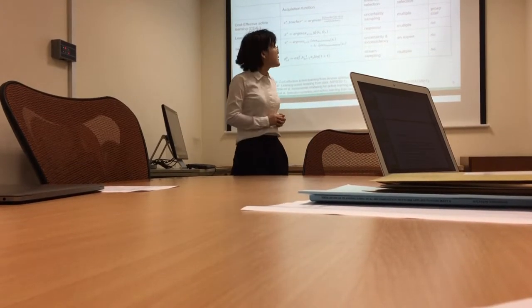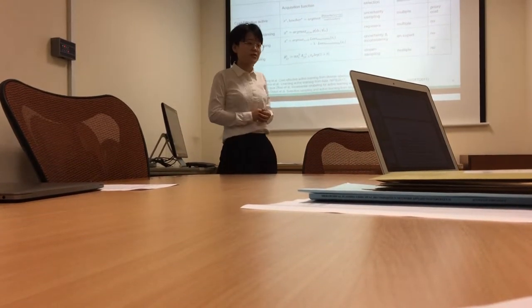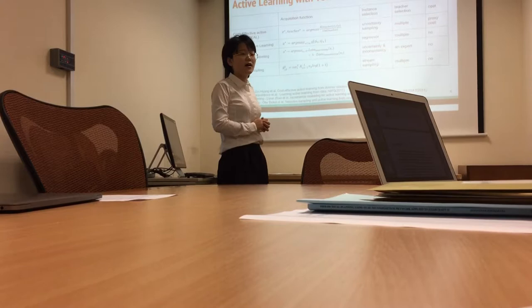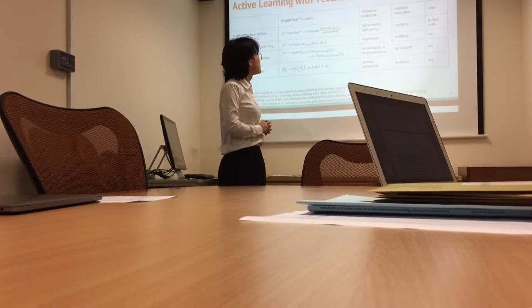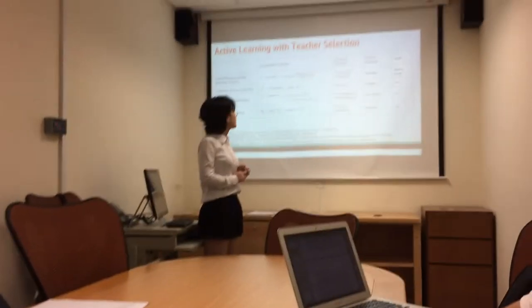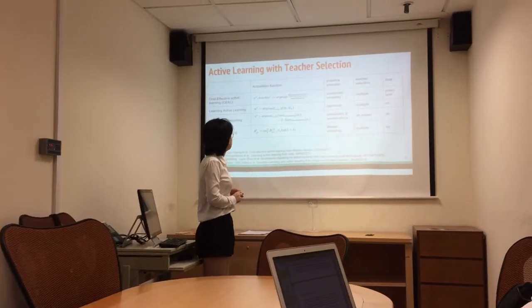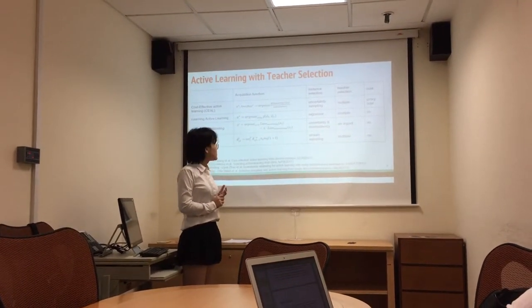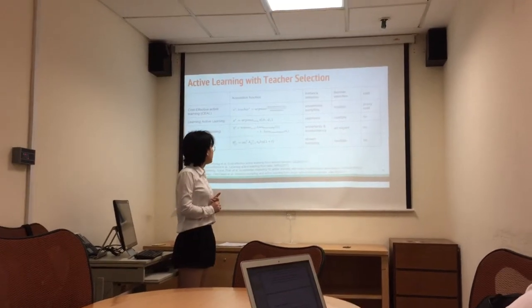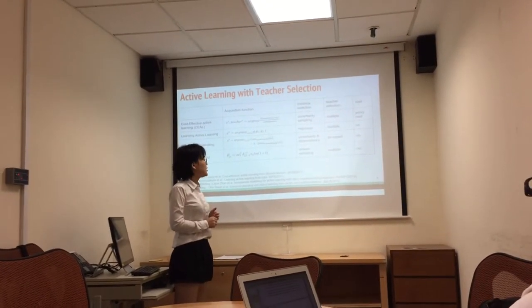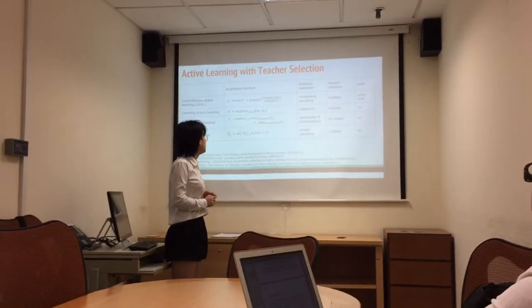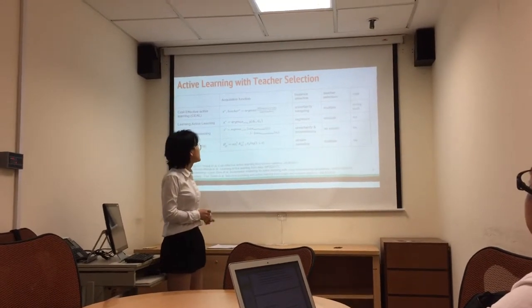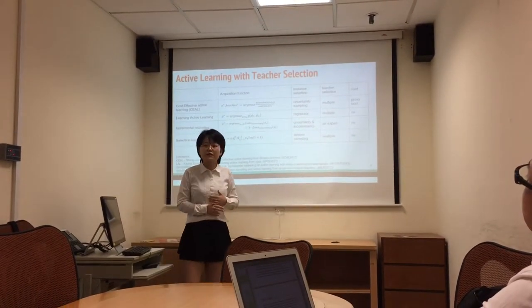I will introduce some modern active learning methods here. The first one is cost-effective active learning (CEAL). It performs joint selection on both the instance and the teachers, and integrates a proxy cost. The second is learning active learning, which learns a regressor on the properties of the objective learner and the features of the data points, mapping them to the error reduction of the objective classifier, using random forest and a Bayesian process.